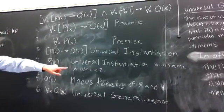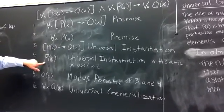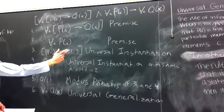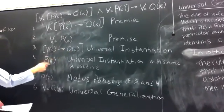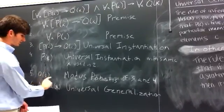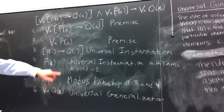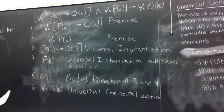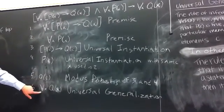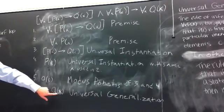Also using universal instantiation on this second premise, we can imply p of x. Now using the principle of modus ponens, where p of x implies q of x, we can derive the fifth step, which is q of x. And then using universal generalization — if an arbitrary element c is proved to be true — we can generalize the statement and say that for all x, q of x.